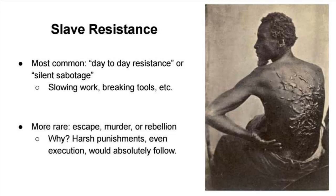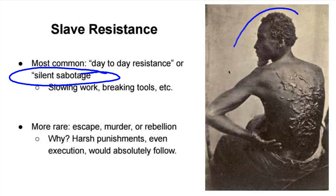The most common form of resistance was day-to-day resistance, more commonly referred to as 'silent sabotage' — intentionally slowing down work, intentionally breaking tools, faking illness to take a day off. Much more rare were escaping, murder, or inciting a widespread rebellion. Why? Because harsh punishments, even execution, would follow. A slave could be made an example to the others — brutally whipped and beaten to prove to the rest that they do not want to try these more overt forms of resistance.